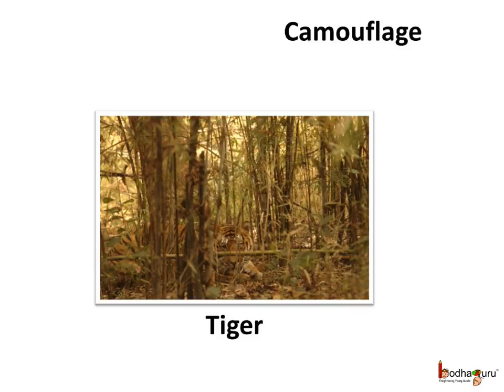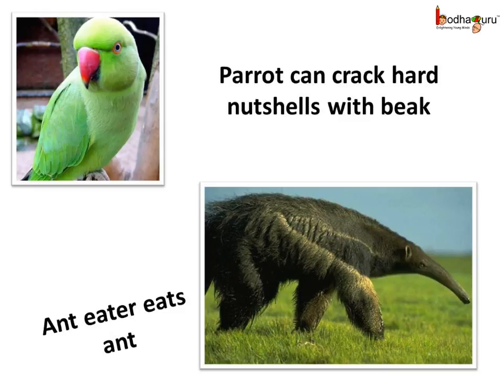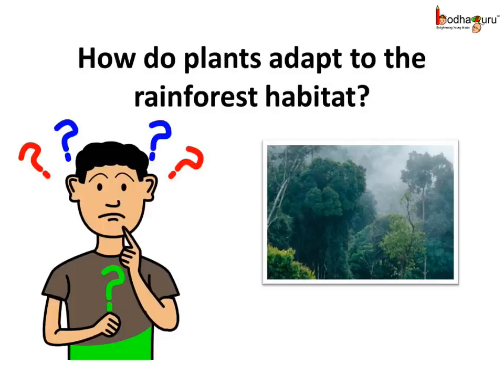Some animals develop special food habits to eat what others cannot eat. Like the parrot has a strong curved beak to crack nuts, and the anteater eats ants etc.